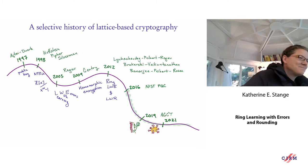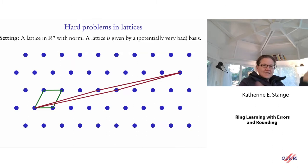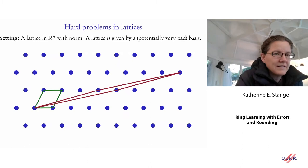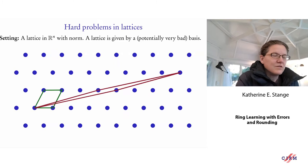A lattice is a copy of Z^n, but what's important is that we embed it in R^n, which has geometry — an inner product, so you have things like length and angles.